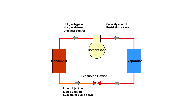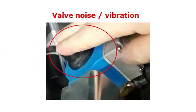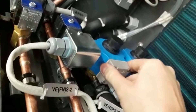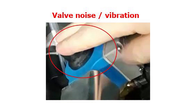The typical solenoid valve locations and functions are shown in this principle diagram of a refrigeration system. Valve noise and vibration are identified in the same way no matter where the valve is located in the system. Here you can see an example of such failures. You will normally hear and or feel by hand such valve failures.